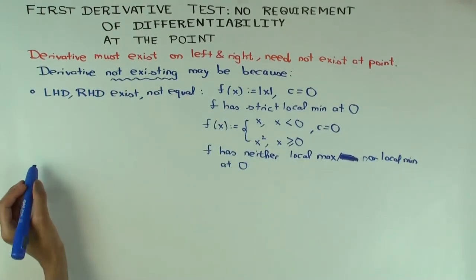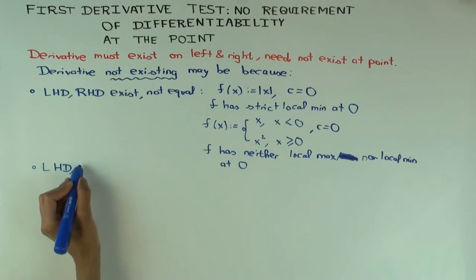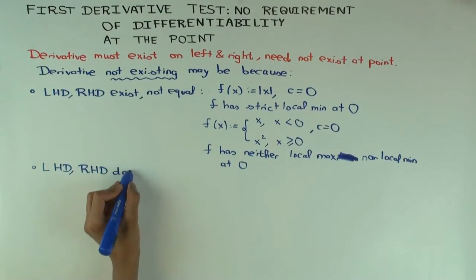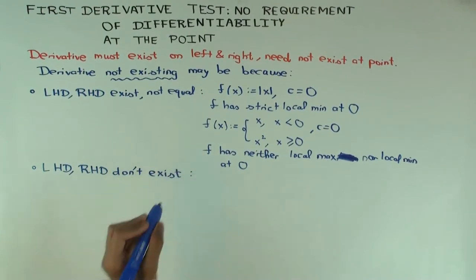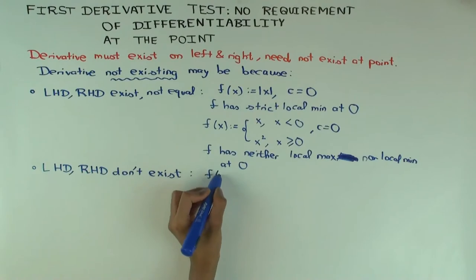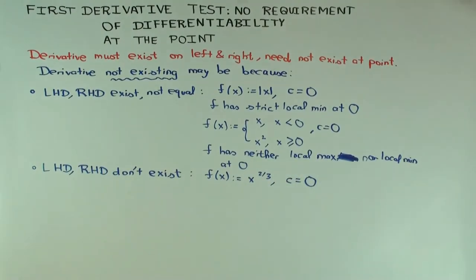But you can sometimes also apply the first derivative test at points where the left-hand derivative and the right-hand derivative don't exist — or one or both of them don't exist. Let me take a couple of examples of that. The first one I'm going to take is f(x) = x^(2/3) and the point of interest is zero.